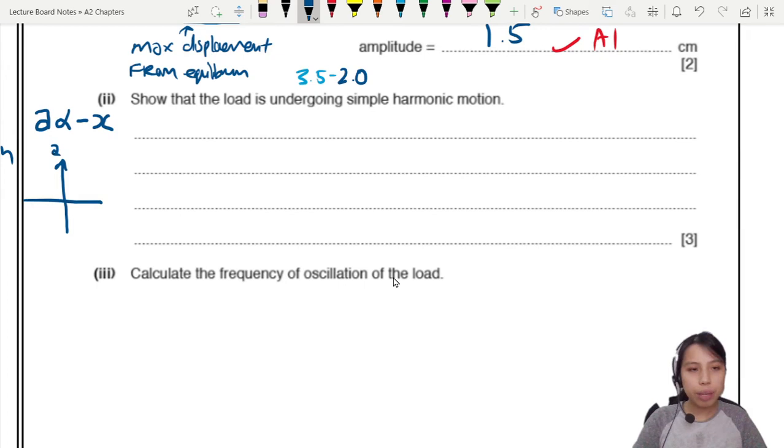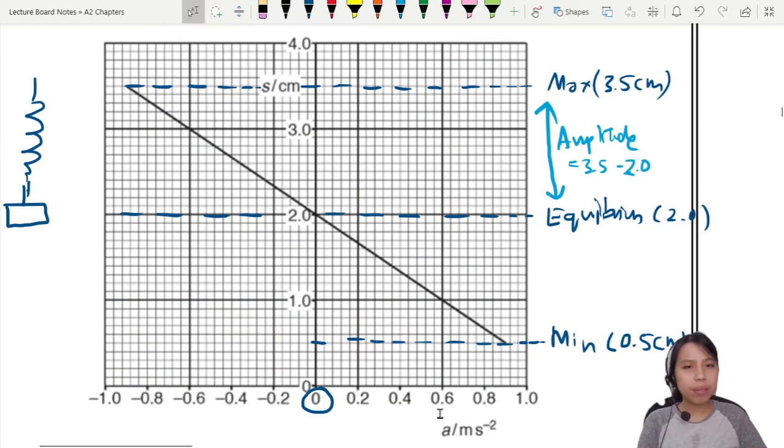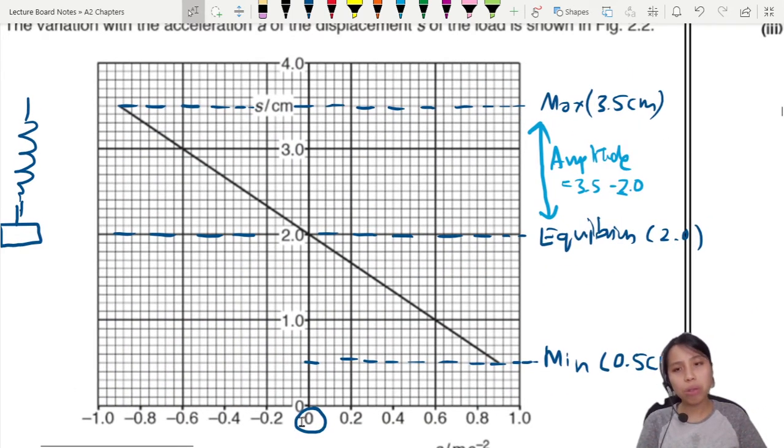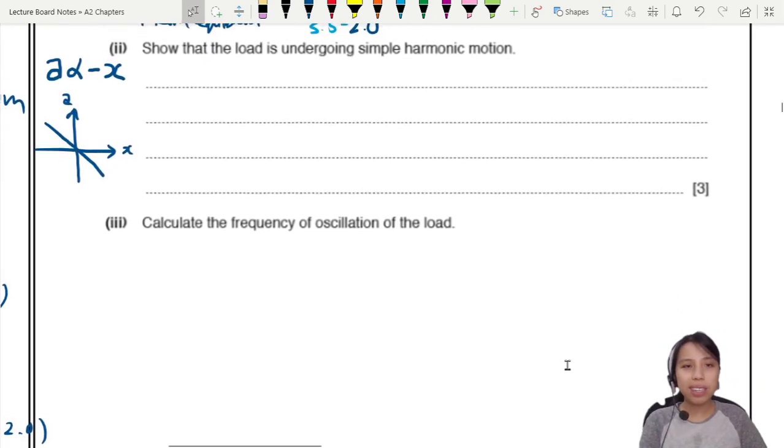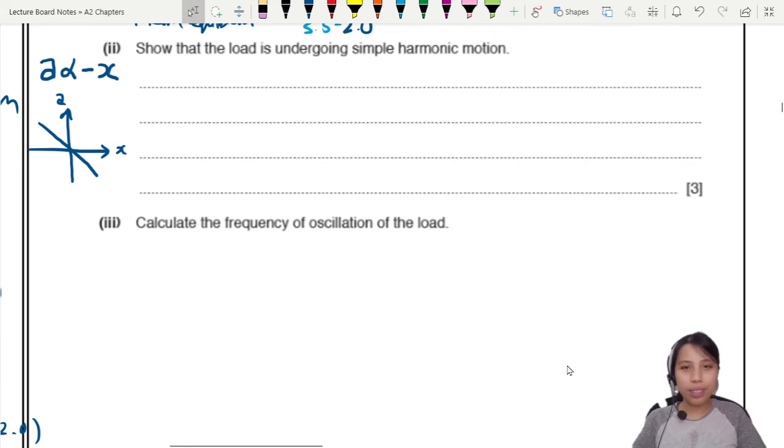If you want to say a system obeys simple harmonic motion, then it must be acceleration proportional to negative displacement. And based on this relationship, if you draw a graph of acceleration against displacement from equilibrium, this x, then your graph must be like this. Straight line. But the question is, is our graph like this? Maybe. Let's check. Is it a straight line? Yes. Does it start from 0? No. But our equilibrium is actually here. Let's call this our x equals to 0 for displacement. And we oscillate up and down. So actually, it does follow simple harmonic motion.